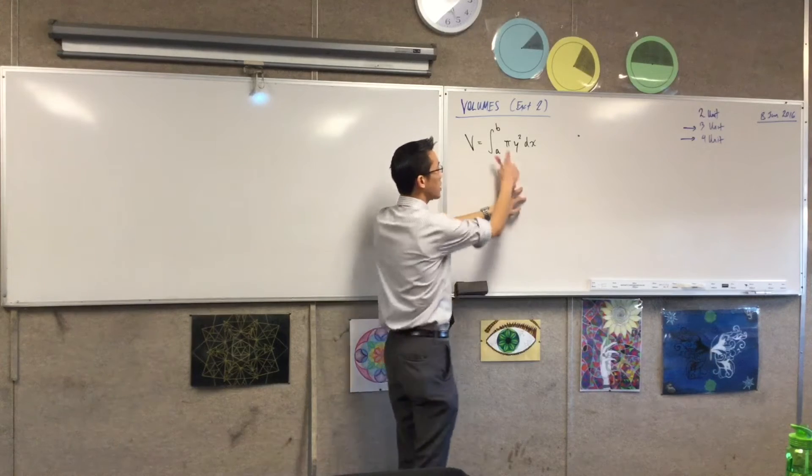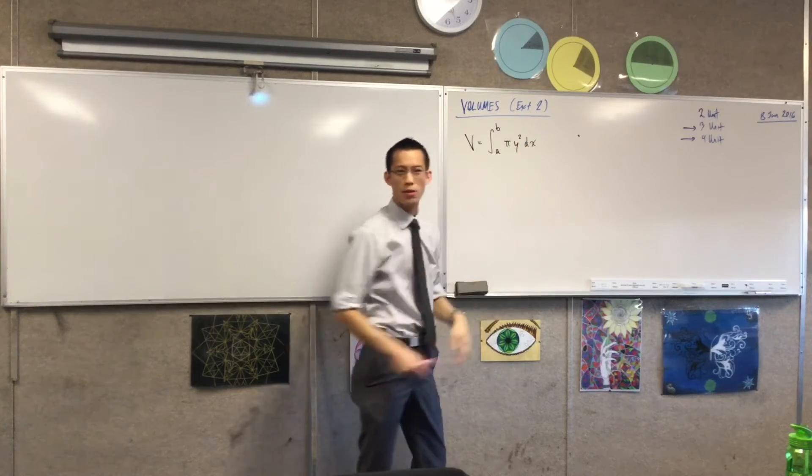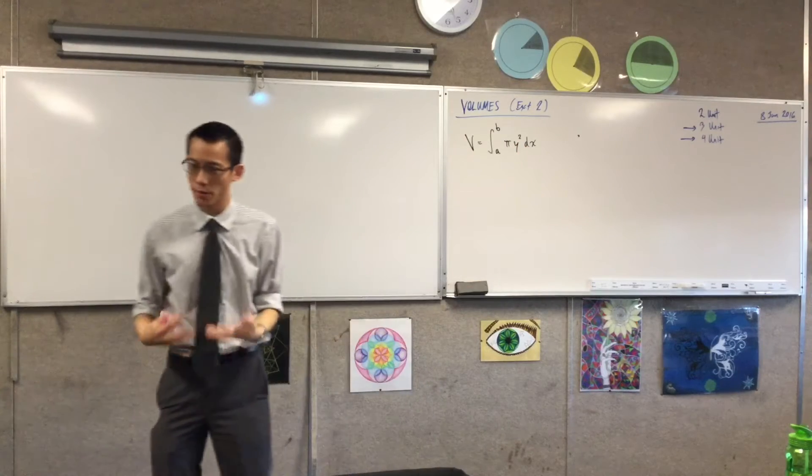It's a cylinder. That's where this pi r squared h sort of thing comes from. Do you remember this? We looked at it before.